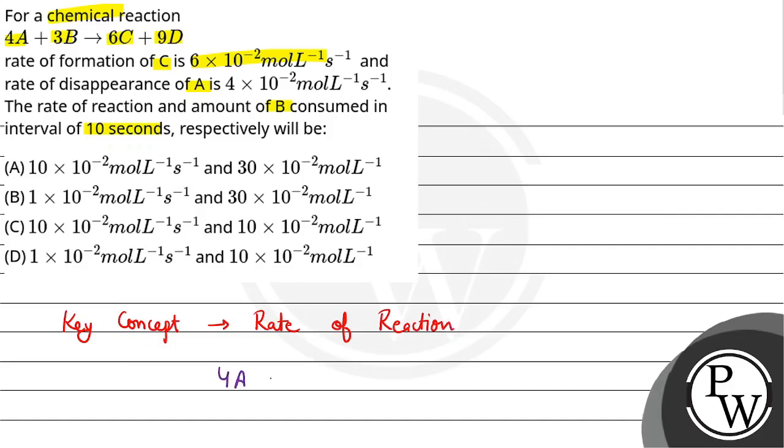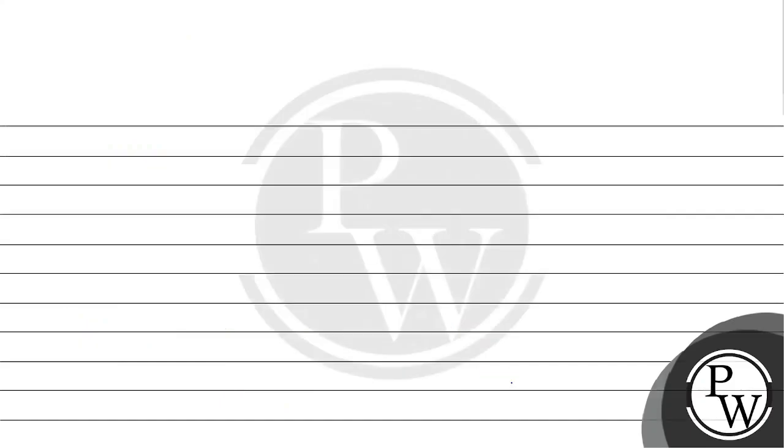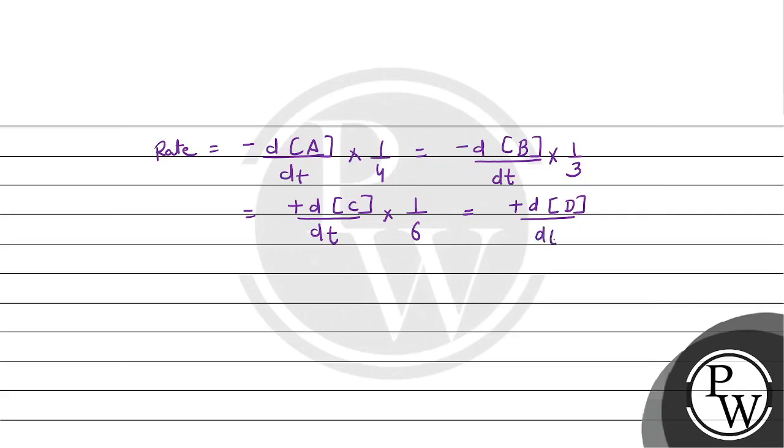In the question, the reaction given to us is 4A plus 3B gives 6C plus 9D. Now if we write the rate for this reaction, it will be rate of disappearance of A, that is -d[A]/dt × 1/4, which is equal to rate of appearance of B which is -d[B]/dt × 1/3, which is further equal to rate of appearance of C which is +d[C]/dt × 1/6, which is equal to rate of appearance of D which is +d[D]/dt × 1/9.